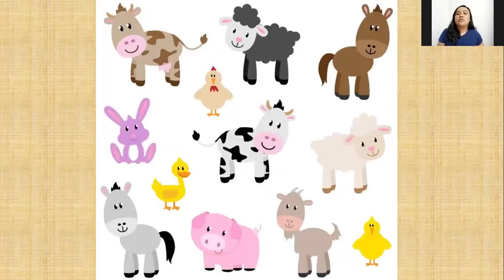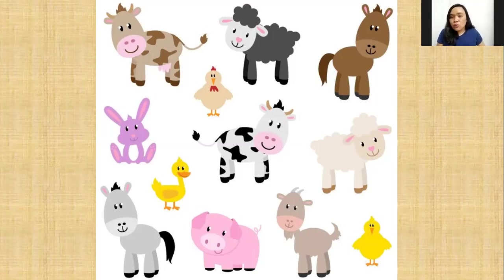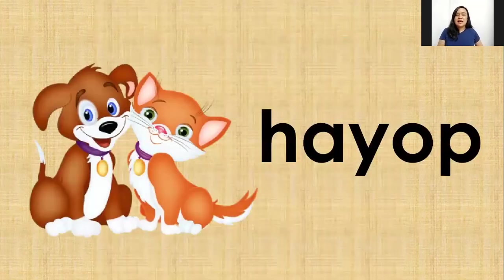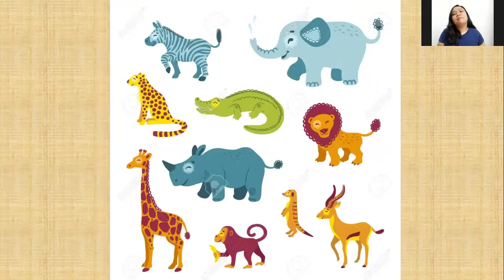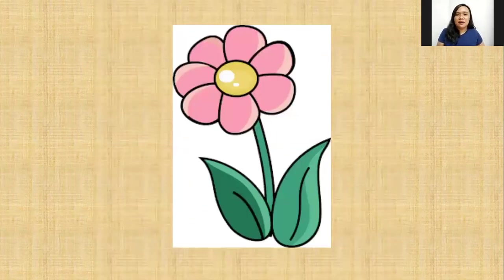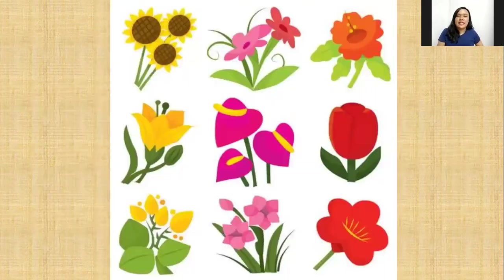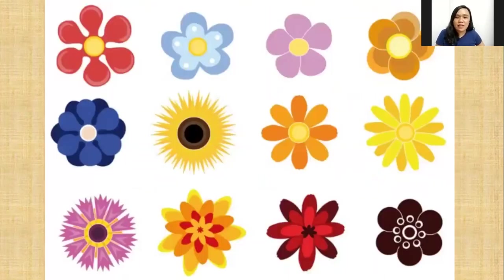This next set of hayop are usually found on the farm. You can see a cow, sheep, donkey, goat, pig, chicken, duck, and chick. Those kinds of hayop are found on the farm. One more time — say hayop! Hayop stands for animal. Good job! So let's review before we go to our short game that teacher Meg prepared.